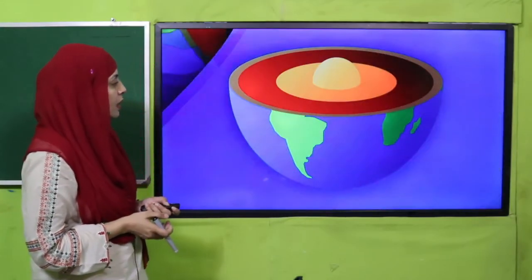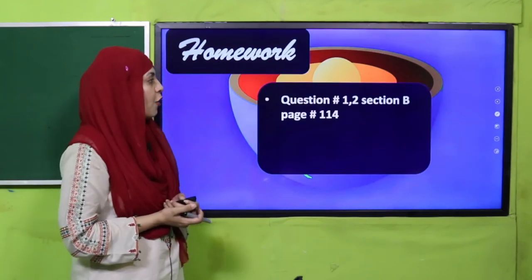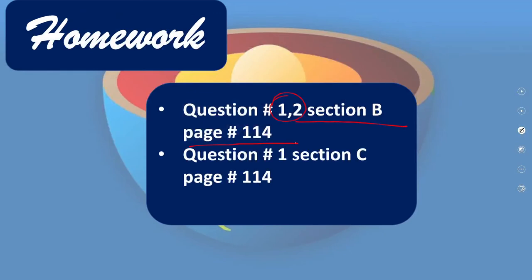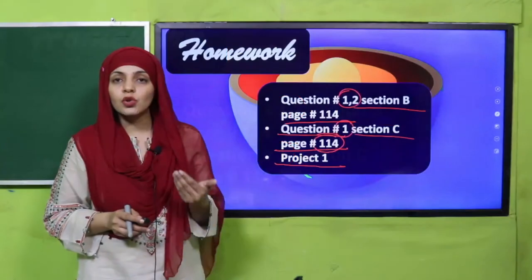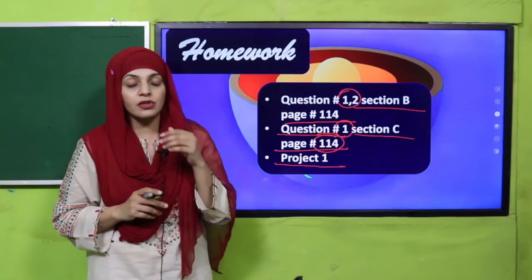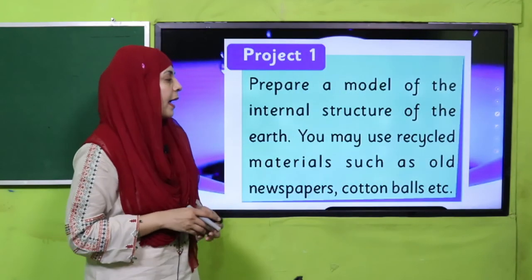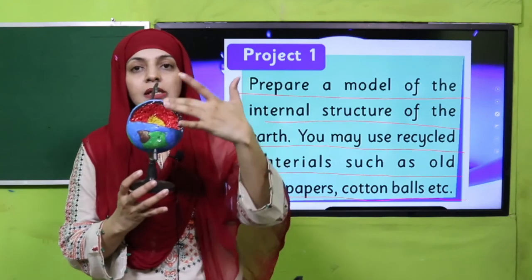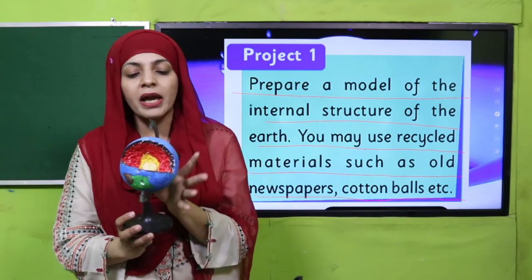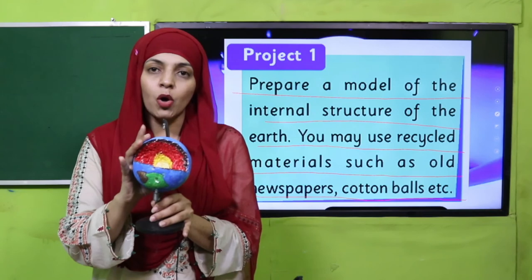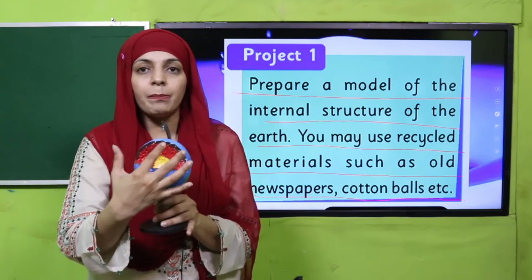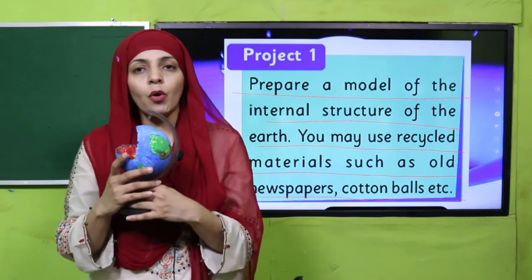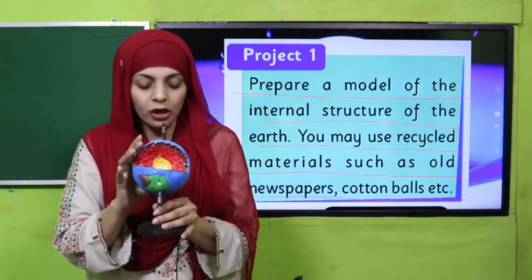I hope everybody has done it. Now let's move forward. For homework, do question number 1 and 2 from section B on page number 114, and also do project number 1. The project is: prepare a model of the internal structure of the earth. You may use recycled materials such as old newspapers, cotton balls, etc. I have made a model using thermopole balls. You can also use newspaper balls — wrap them, paint them, cut them, and paint in different colors. Make your own model and present it in class.